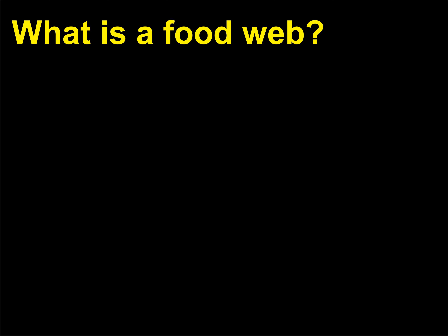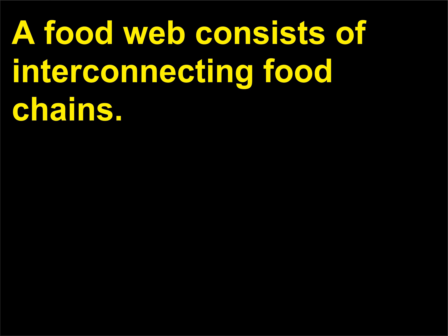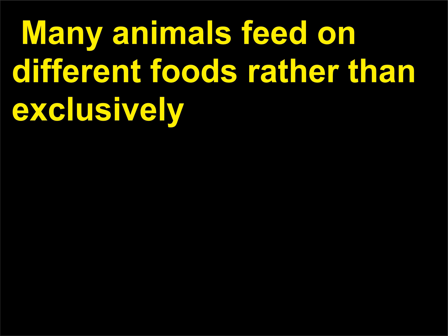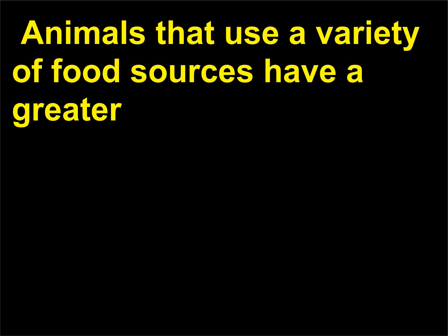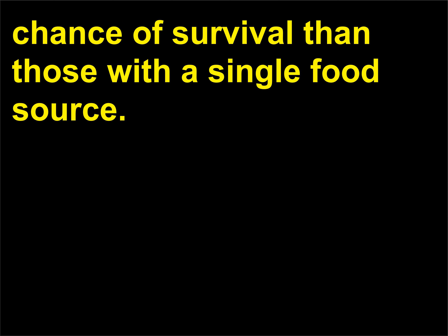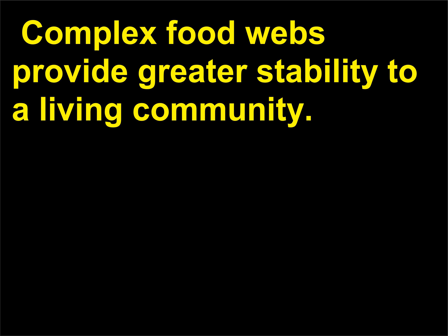What is a food web? A food web consists of interconnecting food chains. Many animals feed on different foods rather than exclusively on one single species of prey or one type of plant. Animals that use a variety of food sources have a greater chance of survival than those with a single food source. Complex food webs provide greater stability to a living community.